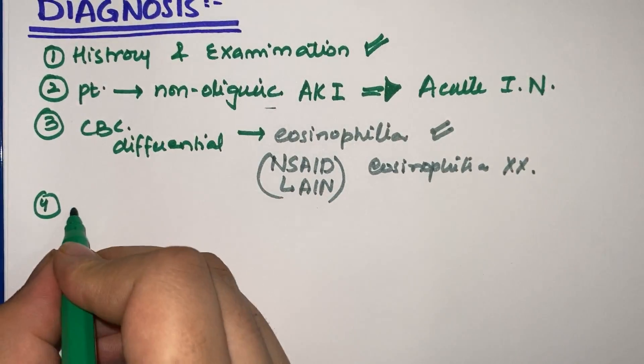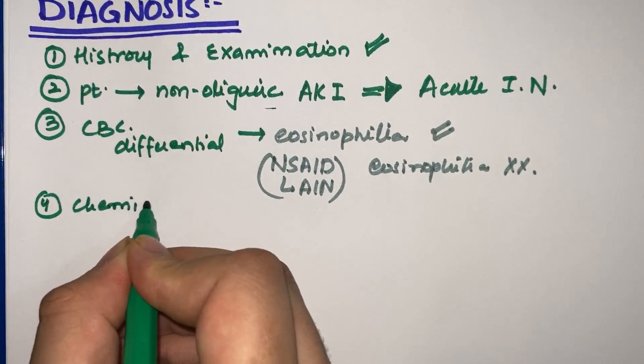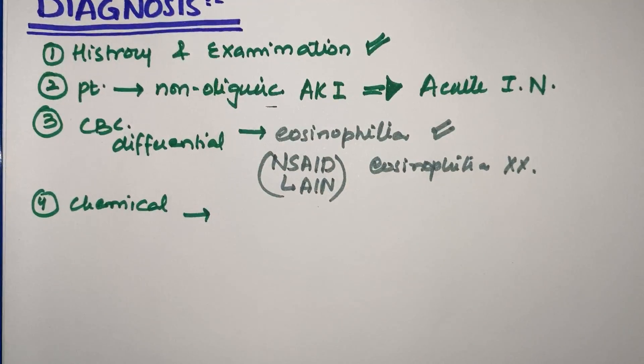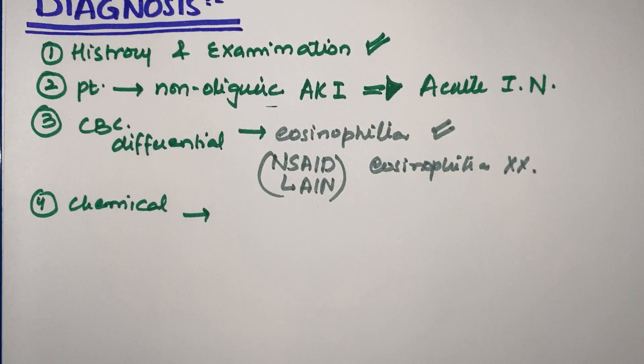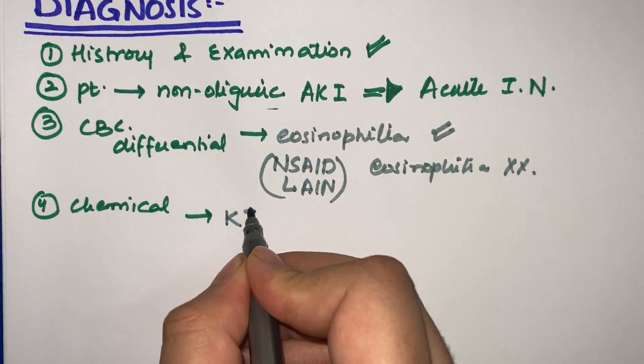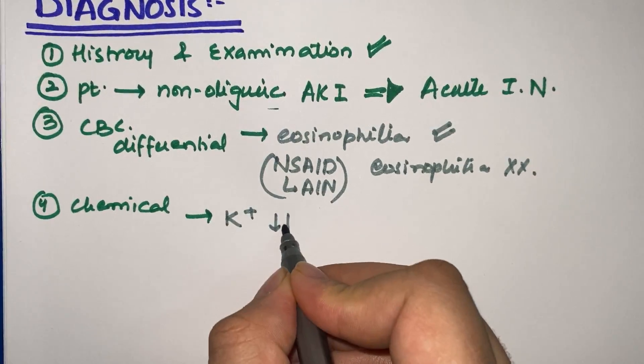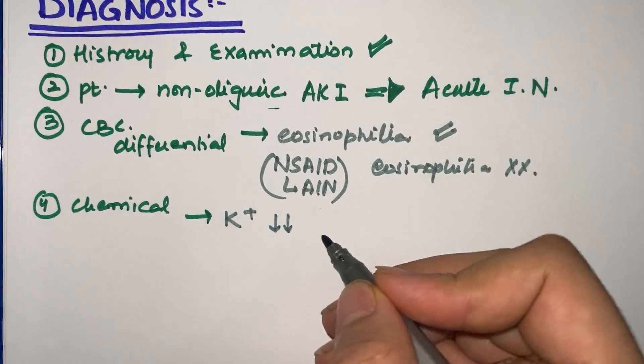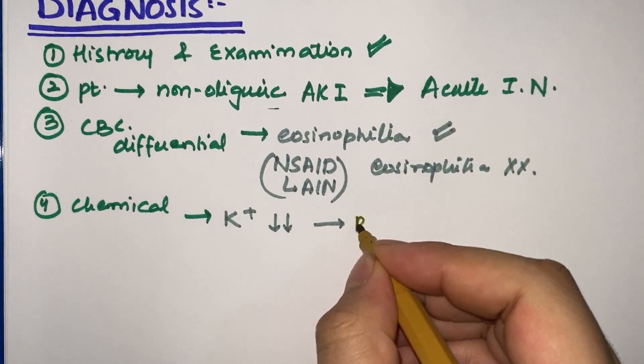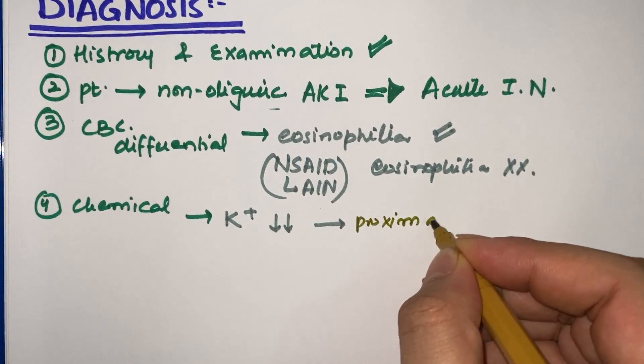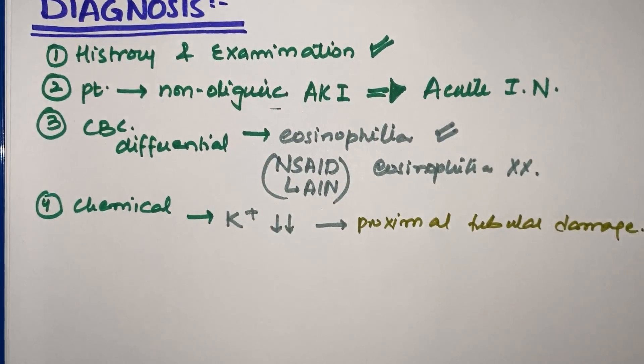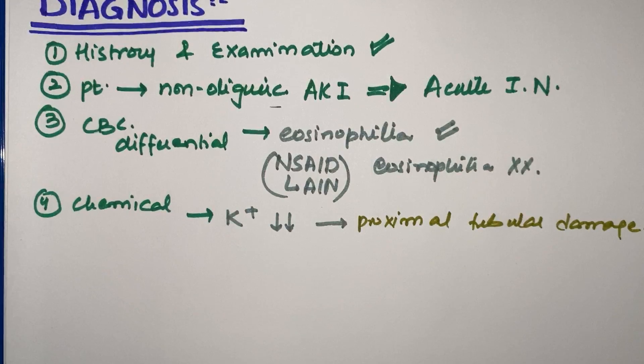Moving to chemical analysis or chemical investigations, we'll examine electrolyte levels and other substances in the blood. In these investigations, if potassium levels are low, this indicates proximal tubular damage is occurring. This is very important—whenever proximal tubular damage occurs, potassium levels will be low in the blood.